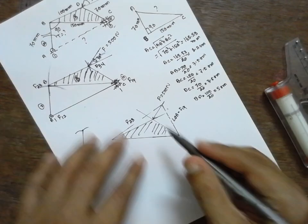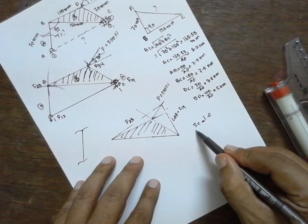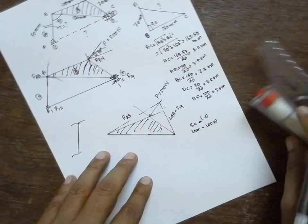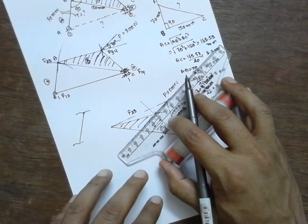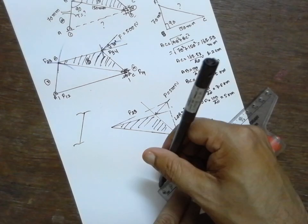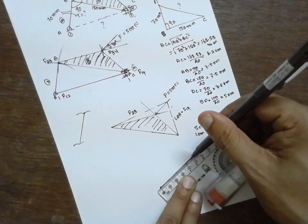First I will consider the scale. One centimeter is equal to 100 Newton. 100 Newton I will draw. This is 5 centimeter I will draw. 5 centimeter I will draw.